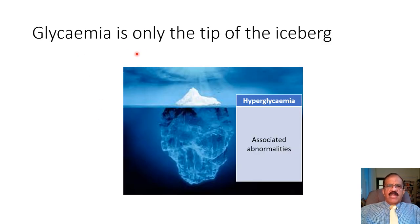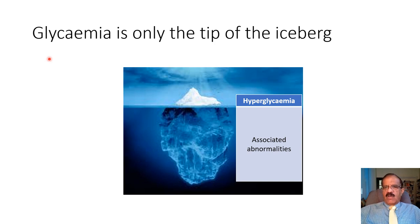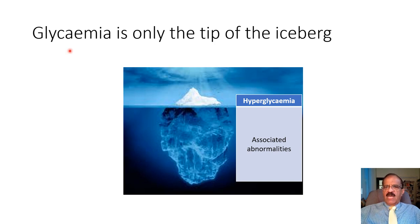Glycemia is the tip of the iceberg. This is not to undermine the importance of glycemia — the very definition of diabetes is based on glucose or its surrogate marker HbA1c, and all therapeutic goals are based on glucose or A1c. Many complications are a direct effect of glucose, and glycemia plays an extremely important role in the pathogenesis of microvascular complications.